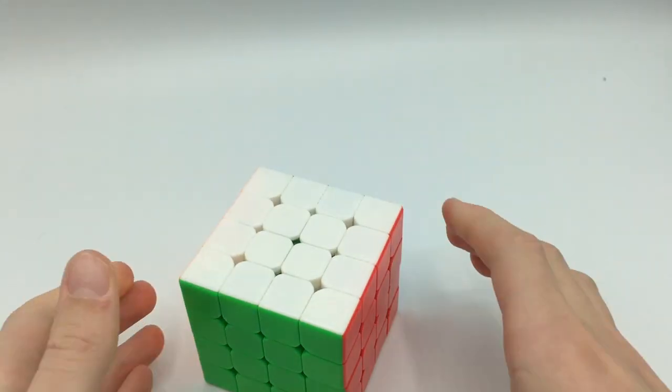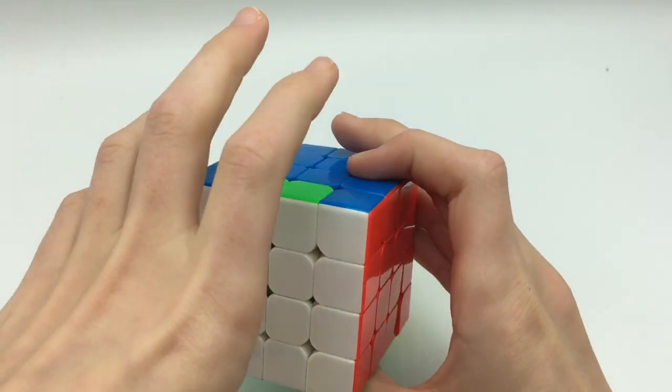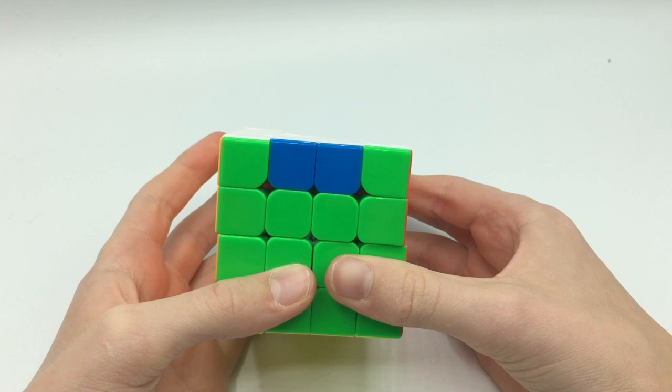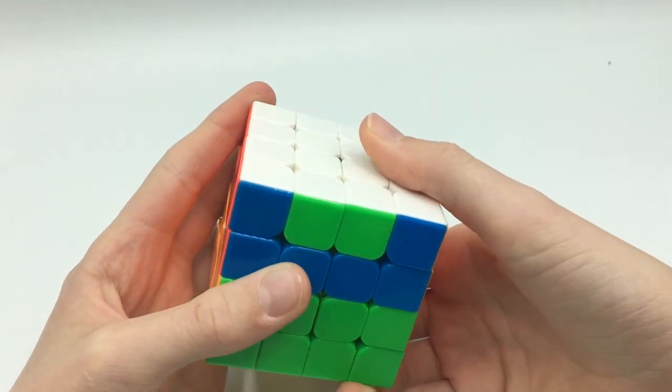So that is OLL parity, and now, PLL parity. PLL parity is when you switch out two edges, so if you switch out two corners as well, just do PLL parity.